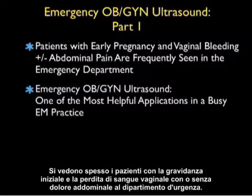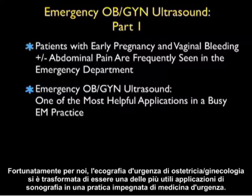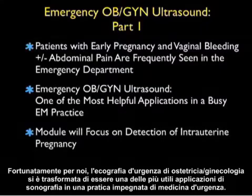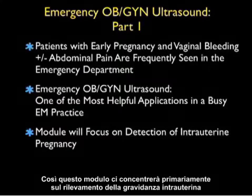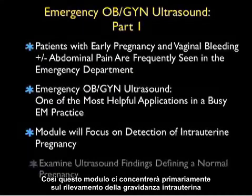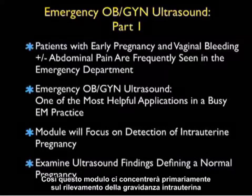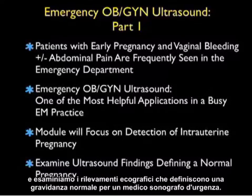Patients with early pregnancy and vaginal bleeding with or without abdominal pain are frequently seen in the emergency department. Emergency OBGYN ultrasound has evolved to be one of the most helpful applications of sonography in a busy emergency medicine practice. This module will focus primarily on the detection of intrauterine pregnancy and will examine the ultrasound findings that define a normal pregnancy for an emergency physician sonographer.